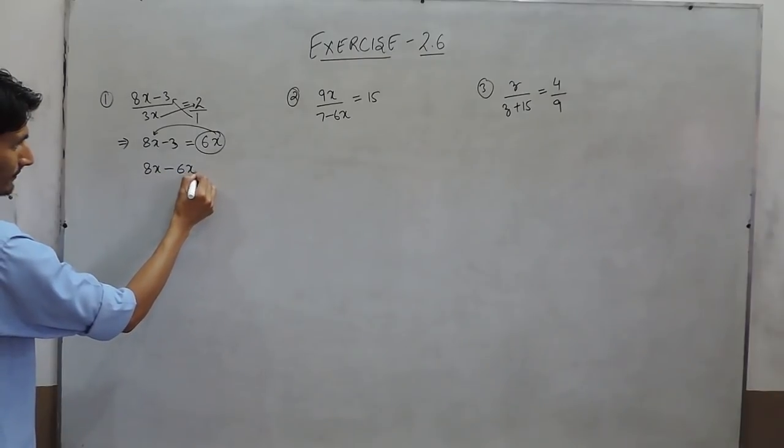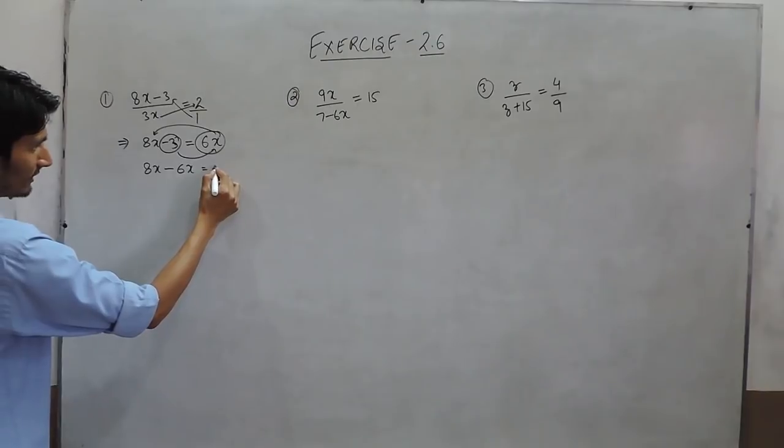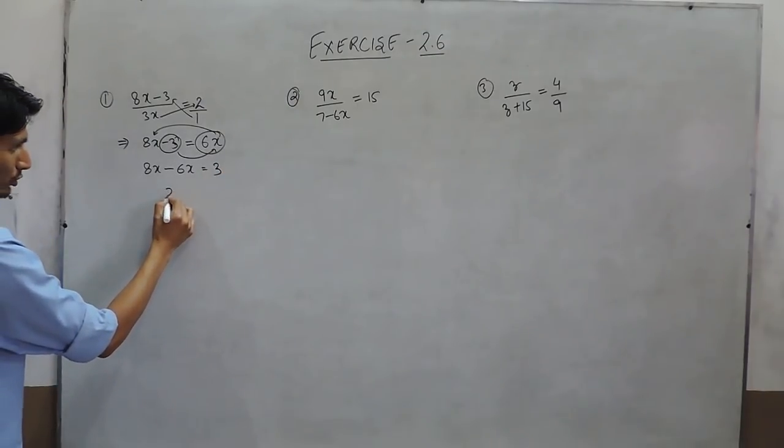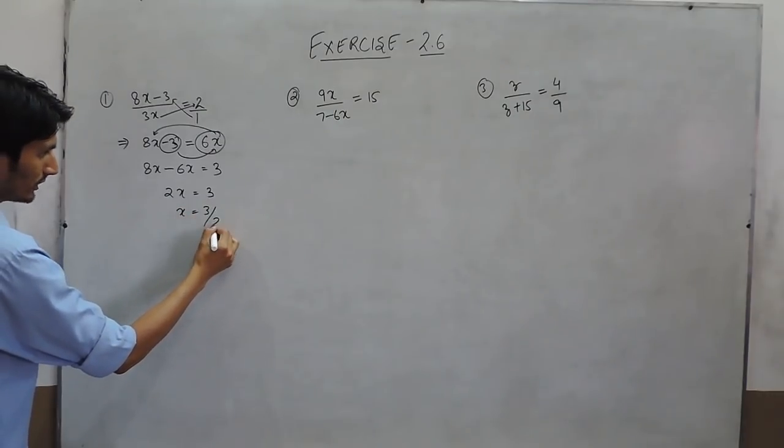So we can simply shift this constant to this side. So this positive will become negative. And when this is shifted, this constant to that side will give positive 3. So this is 2x equals to 3. So x would be equal to 3 upon 2.